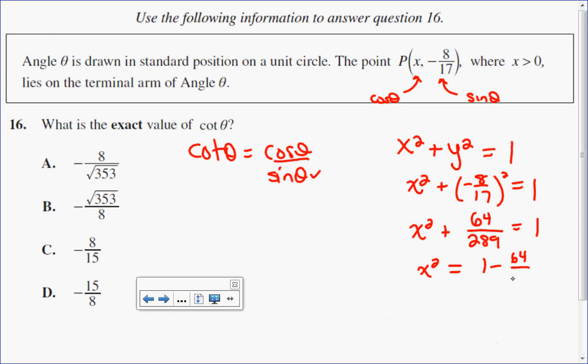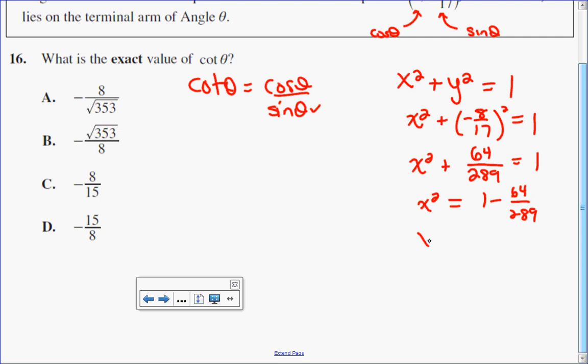1 minus 64 over 289. Let's do that with a common denominator of 289. I would have 289 take away 64. That works out to be 225 over 289.